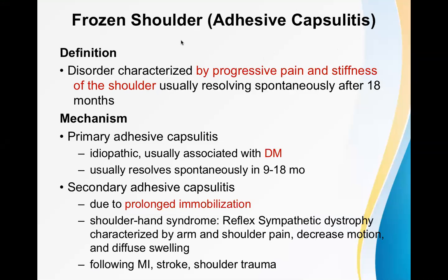What do you mean by frozen shoulder? Another term for frozen shoulder is adhesive capsulitis — 'adhesive capsule' — where the capsule refers to the capsule of the shoulder joint. The definition: this is a disorder characterized by progressive pain and stiffness of the shoulder, usually resolving spontaneously after 18 months.